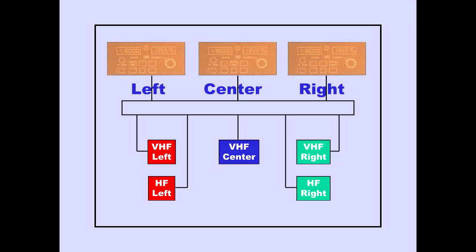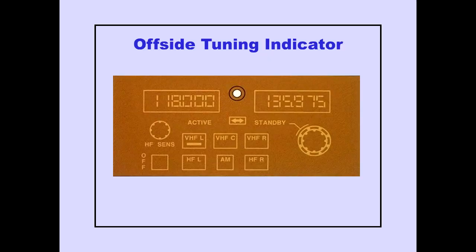Normally, VHF left or HF left will be selected on the left radio tuning panel. VHF center will be selected on the center radio tuning panel, and VHF right or HF right will be selected on the right radio tuning panel. The offside tuning feature allows the tuning of the communication radios from any radio tuning panel. An offside tuning indicator is located on each radio tuning panel; it indicates an offside radio has been selected.